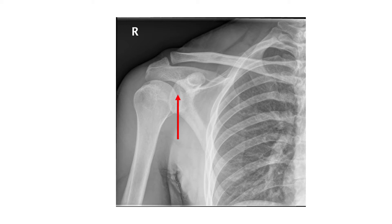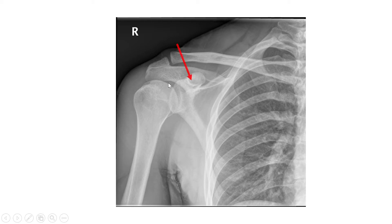This is the glenoid cavity of the scapula, which articulates with the head of the humerus and forms the shoulder joint. This shoulder joint is a ball-and-socket variety of synovial joint. According to the movement of axis, the shoulder joint is a multiaxial joint. According to the number of articulating bones, the shoulder joint is a simple joint.